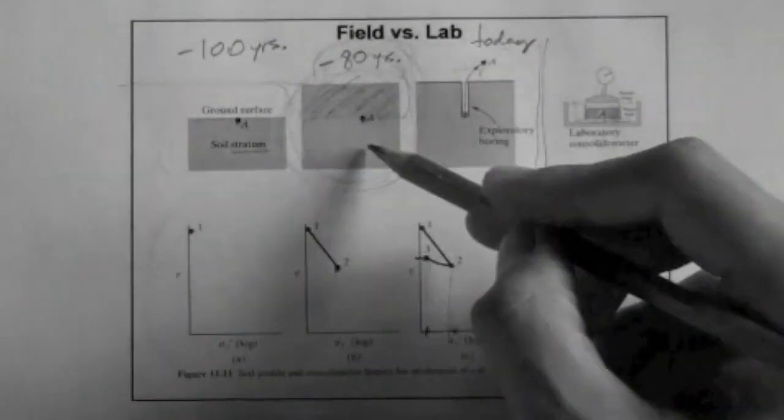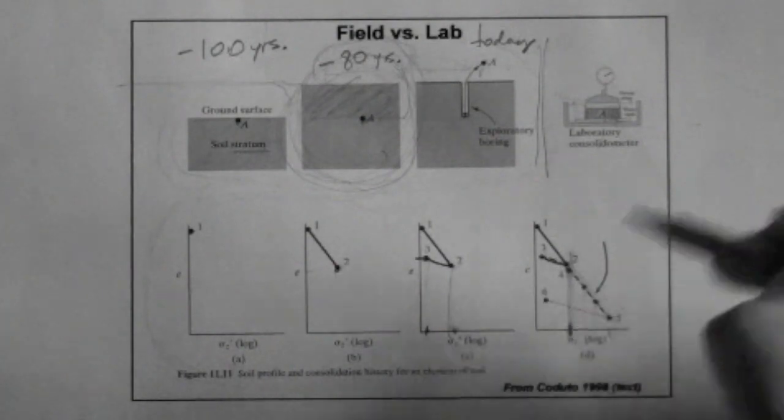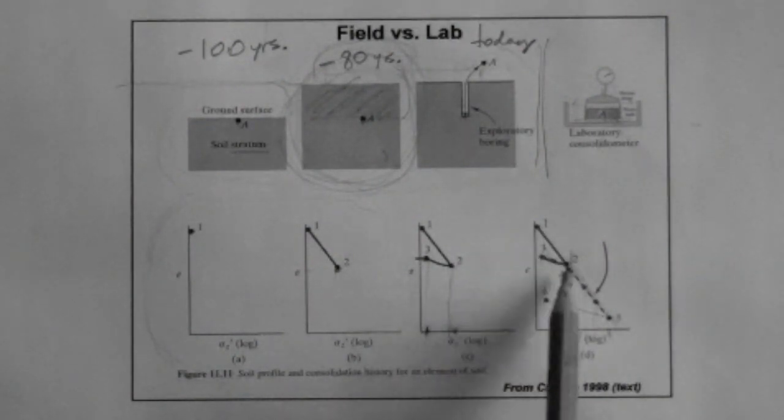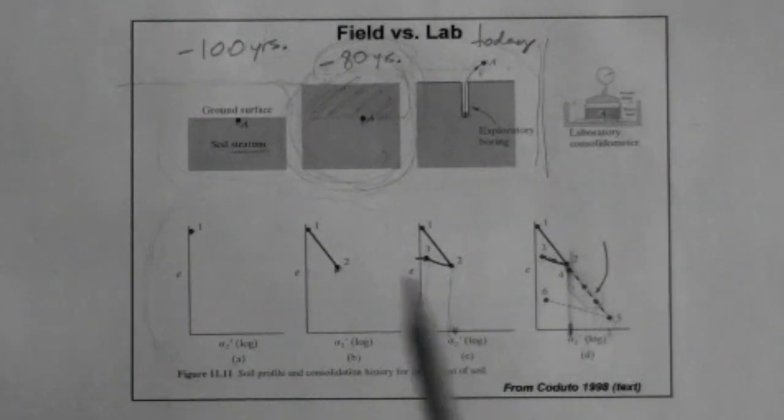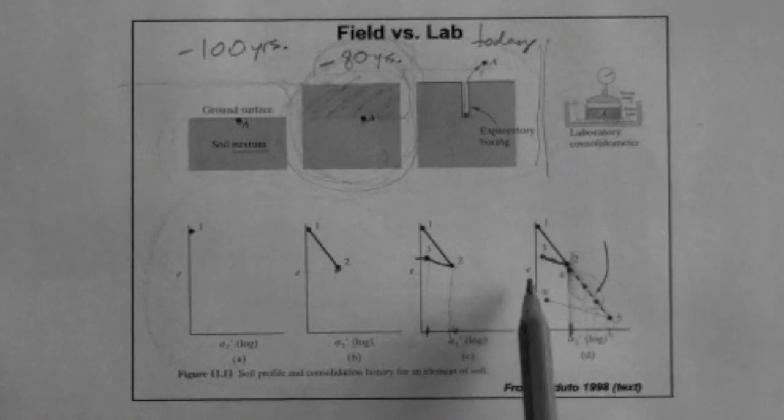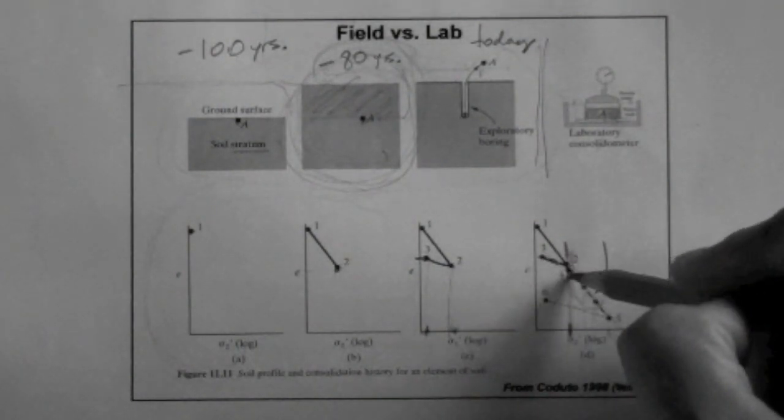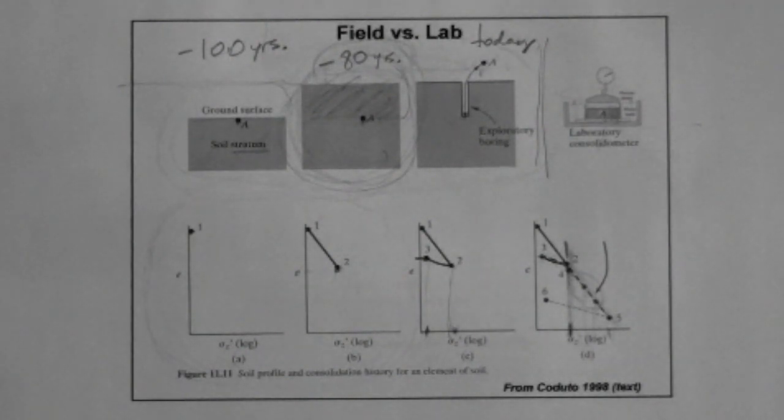And that maximum stress that the soil felt is revealed by the consolidation curve. It's this break. Remember that the only thing we know in the lab, as engineers, is the red curve. We don't know what points one, two, and three. We only know points three, four, and five, and these other two that I've added here, let's say. Those are the only ones that we get in the lab. We do not get points one and two and three. So the idea is that if you can determine this stress, which marks the transition, the break, then you have determined the maximum stress that the soil has ever felt in the field. So that's why we say that soils have memory.